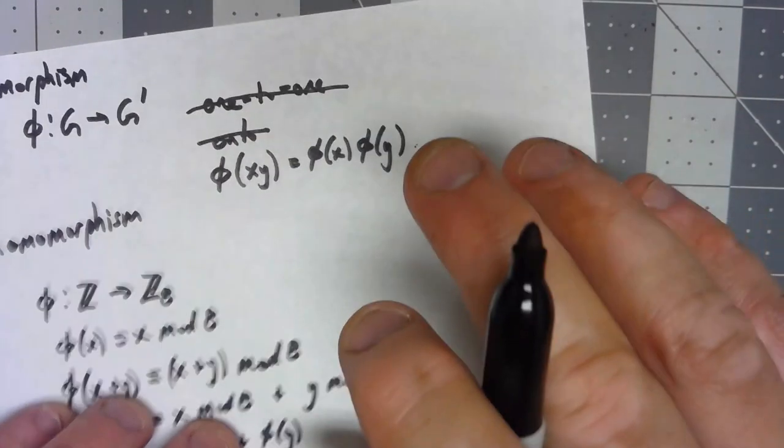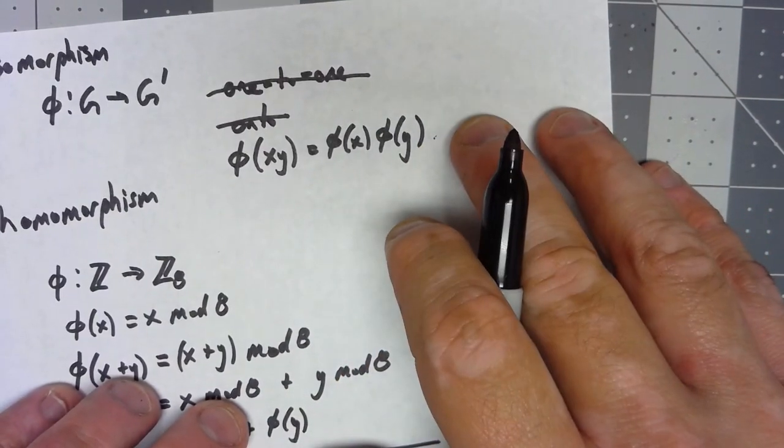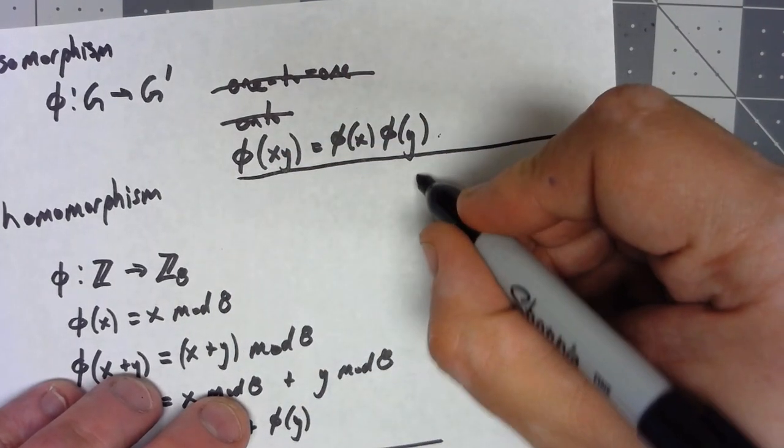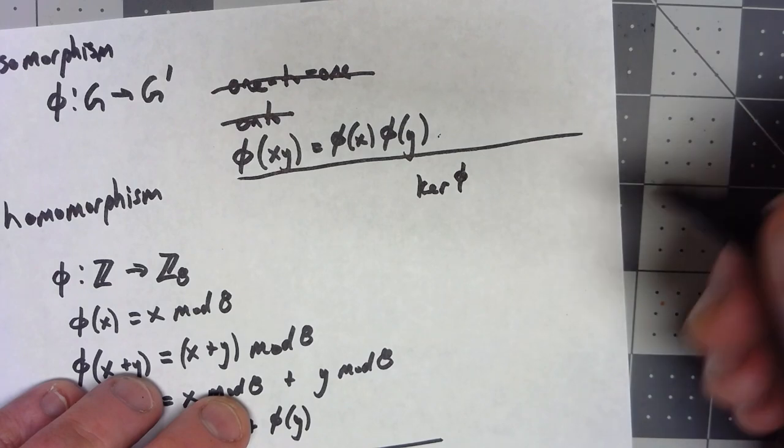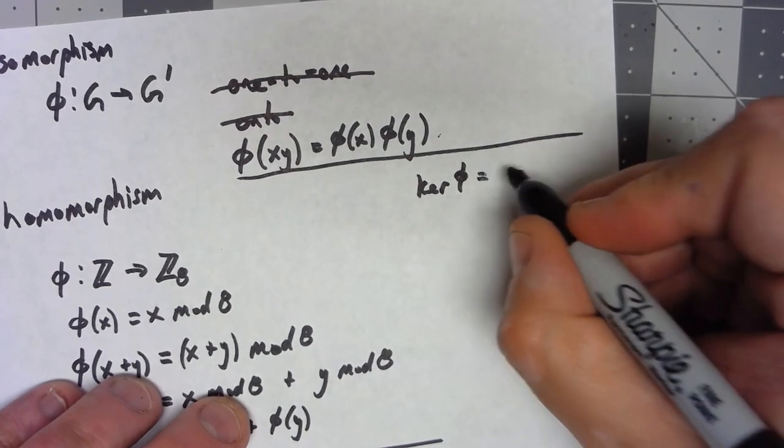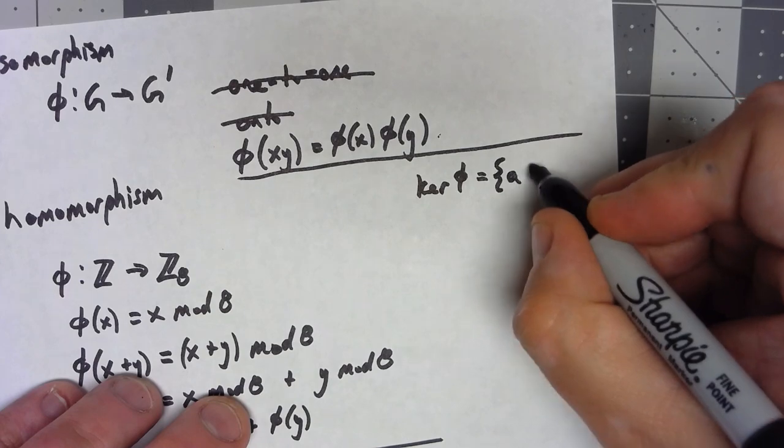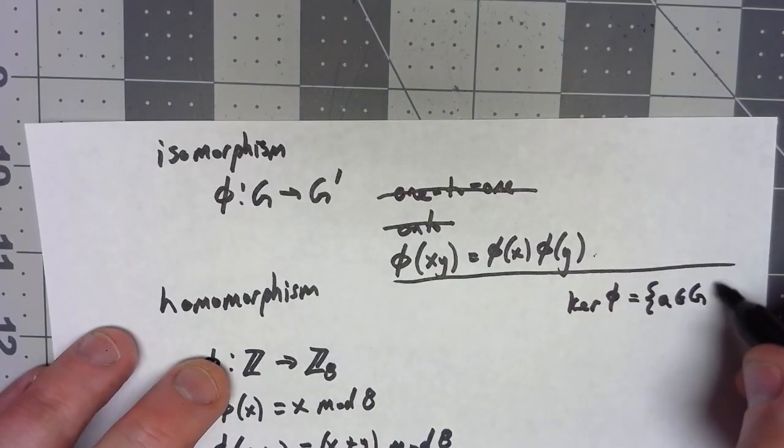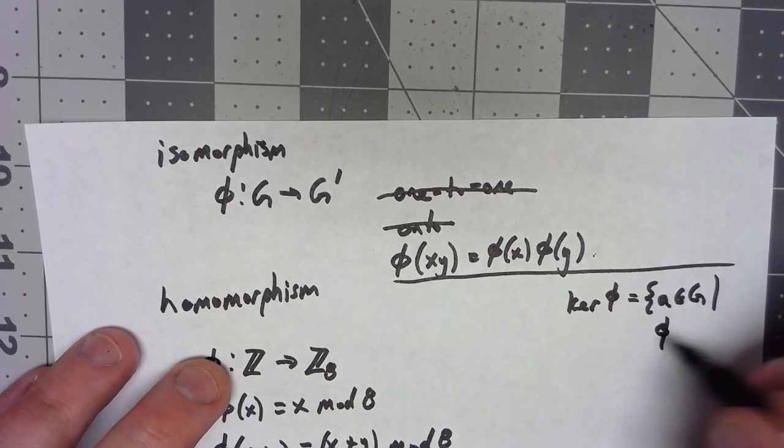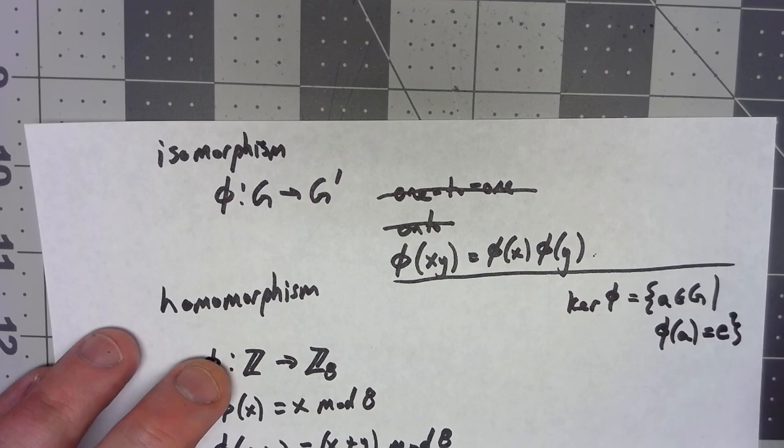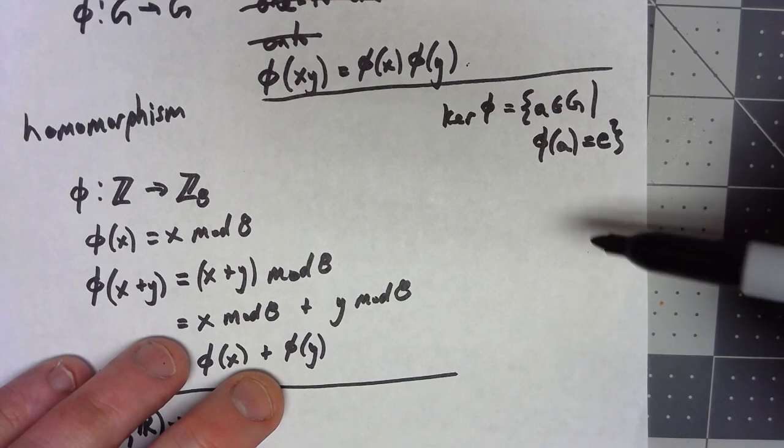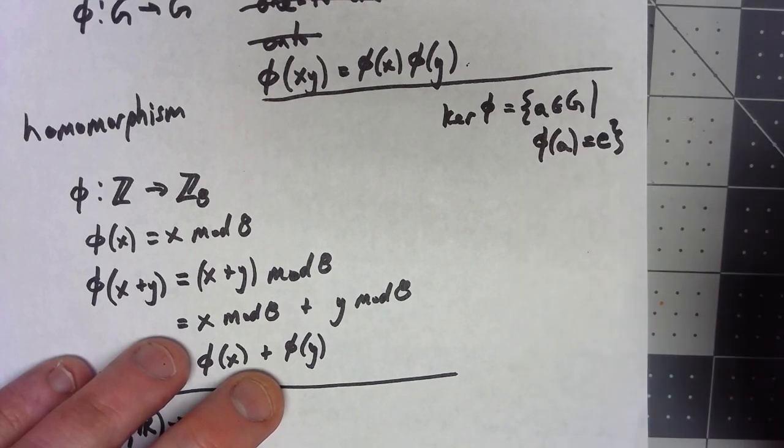Going back up to the top, there's an important subgroup that's associated to a homomorphism. It's called the kernel of the homomorphism, and what that is, it's the set of all elements in the original group G such that when I do the homomorphism to that thing, I get the identity. This turns out to be a subgroup and in fact a normal subgroup of G, which is very important.